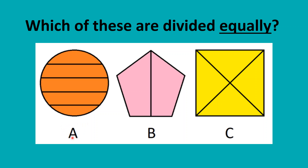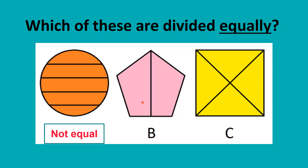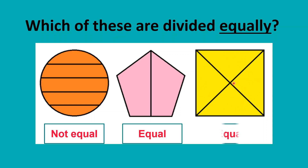Have a look at these three figures. We want to know which of these are divided equally. Is A divided into equal parts? No, it is not equally divided — these parts have different sizes. Let's look at B. Are they divided equally? Yes, they are — this side and this side are of the same size, so it is equally divided. What about C? Yes, it is — this side is the same as the other three sides, so they are divided equally.